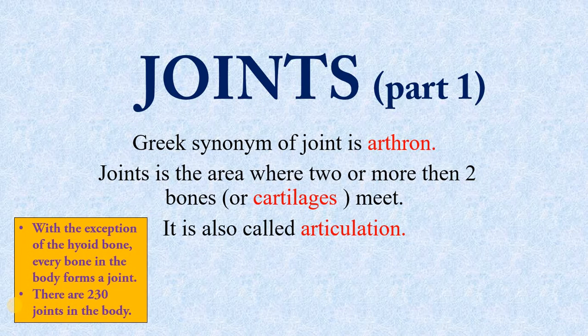The topic is joints. We call joints by the Greek word 'Arthron.' The joint is related to articulation — for example, Rheumatoid Arthritis. Arthritis or Arthron means joint. So understanding the word helps you understand joint-related diseases. A joint is an area where two or more bones meet, and we also call it articulation.